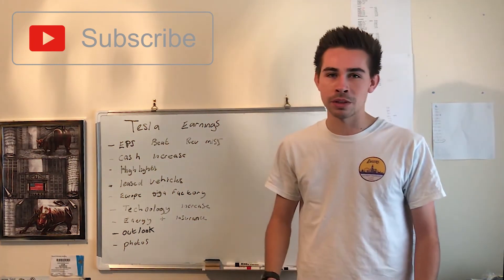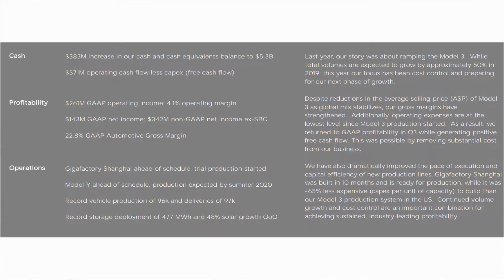Another standout point was the Model Y. Model Y was ahead of schedule. We're now expecting production to be in summer next year, previously we were expecting it to be autumn which is really good. Record vehicle production which was 96,000 and deliveries of 97,000. Early on last month we had people coming out saying that was a miss of what they were expecting and it wasn't really good. But at the same time on the channel I was saying look, that's still a record delivery and it's fantastic growth from where they are so let's not put that down and that really paid off for them in this earnings report.